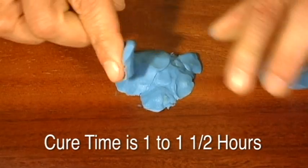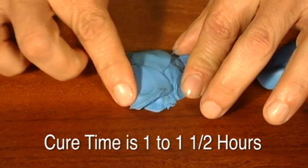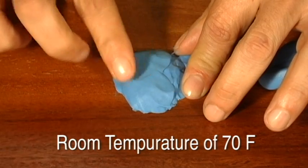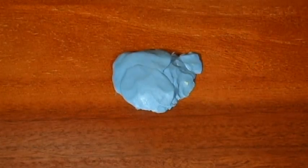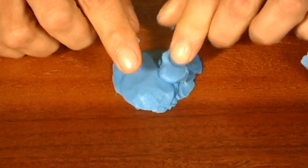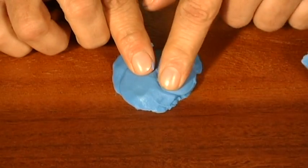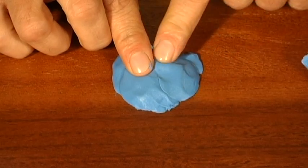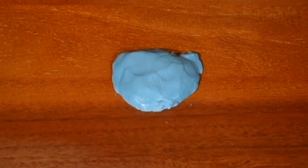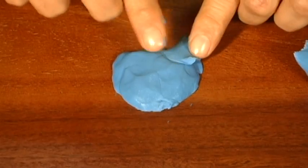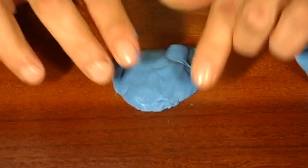Silicone plastique has a cure time of one to one and a half hours at a room temperature of 70 degrees Fahrenheit. Many competing silicone putty materials have a shorter cure time of anywhere from 5 to 20 minutes. Such a short cure time does not allow enough time to apply the material to larger or more complicated objects.